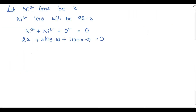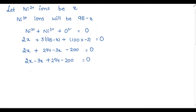Solving: 2x plus 3 into 98 gives 294, minus 3x, then 100 into minus 2 gives minus 200, all equal to zero. So 2x minus 3x plus 294 minus 200 equals zero, giving minus x plus 94 equals zero. Taking this to the other side, minus x equals minus 94, so x equals 94.